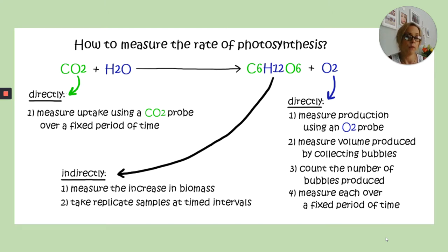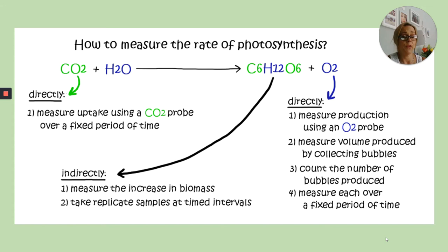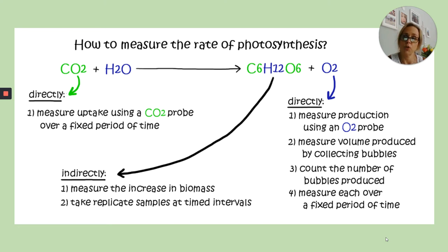For a more direct measure, if you have a CO₂ probe or an oxygen probe, you could measure the uptake of CO₂ — how much CO₂ the plant is using in photosynthesis — or measure the production of oxygen, which is a byproduct of photosynthesis. Another direct method is to measure the volume of oxygen released by a plant; that gives you an idea of how quickly photosynthesis is happening. We can also count the number of bubbles produced if we're using an aquatic plant like Elodea, which is the method used in school for your required practical.